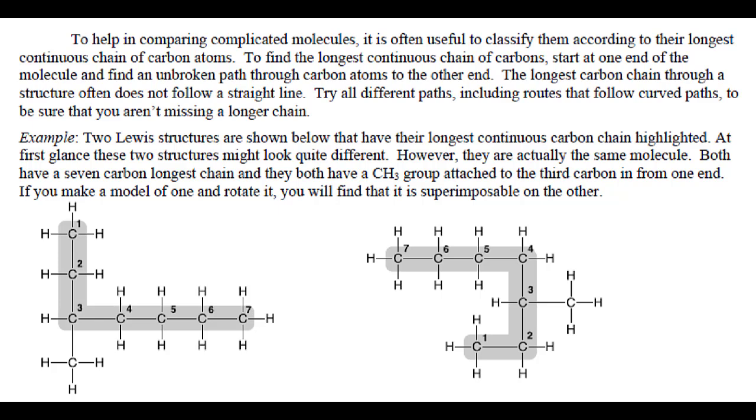If you number the longest carbon chain, you can also learn something about the things that are attached to it. For example, in the left structure, we're going to start in the upper left corner of the molecule and number from one to two to three to four to five, six, and seven. We're starting here from the end of the chain that's closest to the first branch point, so it makes sense to start from the upper left rather than the right-hand side because it gives the lower number to the first substituent, the only substituent, which is a CH3 group. It's important to do that consistently when you're comparing molecules.